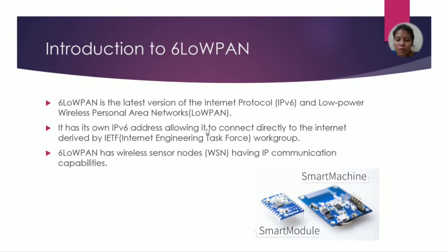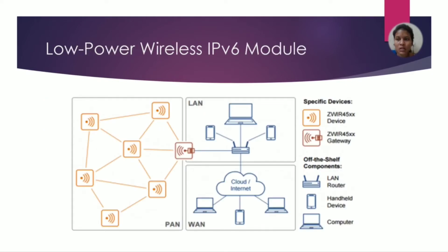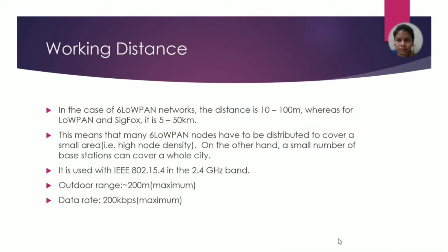IPv6 is used for low power devices. This is the 6LoWPAN order definition — 6 low power wireless IPv6 model. The network types include LAN, WAN, and PAN, with specific device and off-the-shelf switch components.